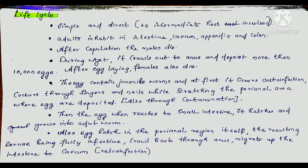Also, infection occurs through contamination. When the egg reaches the small intestine, it hatches and grows into an adult worm. Also, the egg can hatch in the perineal region itself — the resulting larvae are fully infective and crawl back to the anus, then migrate up to the intestine and caecum. This is known as retro-infection. So there are two types: auto-infection and retro-infection.